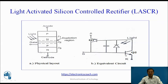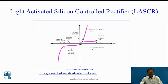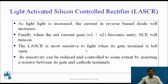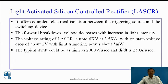Through this regenerative reaction, LASCR turns on. LASCR is most sensitive to light when its gate terminal is left open. Its sensitivity can be reduced and controlled to some extent by inserting a resistor between its gate and cathode terminals. It offers complete electrical isolation between the triggering source and the switching device, which is why LASCR acts as an optoisolator. The forward breakdown voltage decreases with increase in light intensity. The voltage rating of LASCR is up to 6 kV at 3.5 kA with an onset voltage drop of about 2 volts and a light triggering power of about 5 mW.